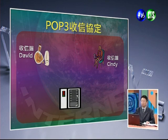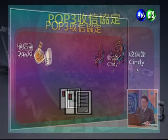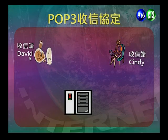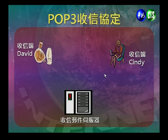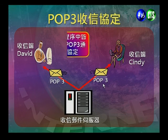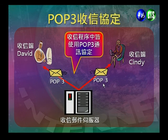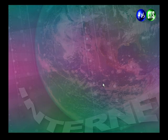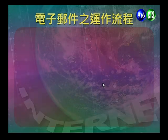第二个协定是POP3（邮件协定第三版），主要规范收取信件过程中所需使用的传输协定。收信程序使用的通信协定就叫POP3，负责收信的邮件伺服器又称为POP3伺服器。收信端（如Sandy和David）都需要透过POP3来收信，收信过程中都使用POP3通信协定。